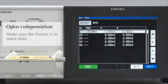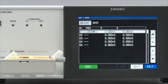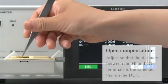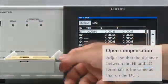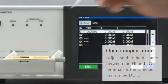Adjust the fixture so that it is in open condition. Temporarily place the component being measured on the fixture. Now remove the DUT.